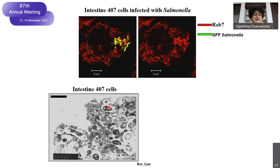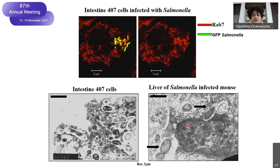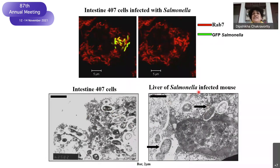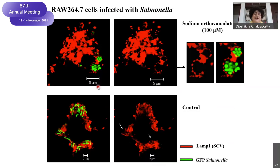This is not only true in intestinal cell lines — you can see a single bacterium per vacuole here. It is also true in the liver, in the whole organ of the infected mouse. We are very lucky to have the mouse as a model system to study systemic infection, because typhi is very specific to humans. In the liver of the mouse, you can see Salmonella beautifully residing in a single bacterium per vacuole.